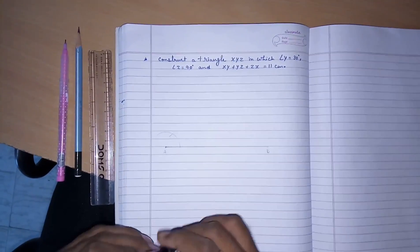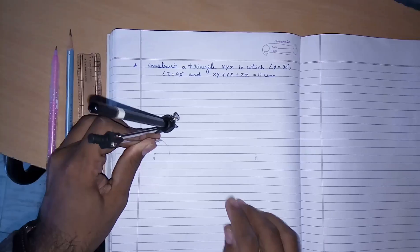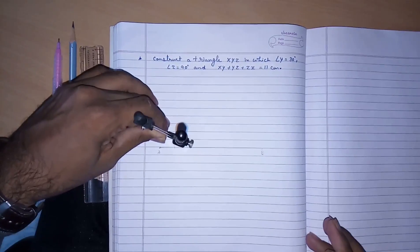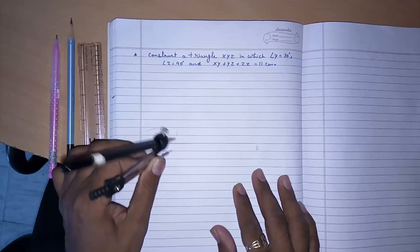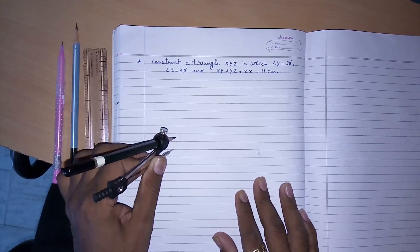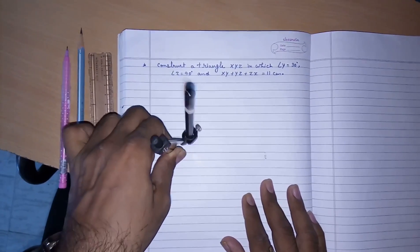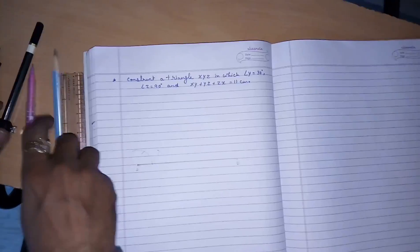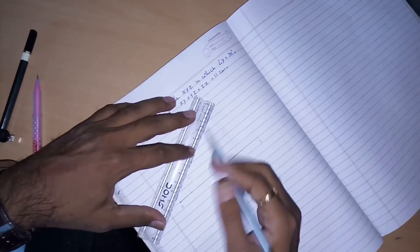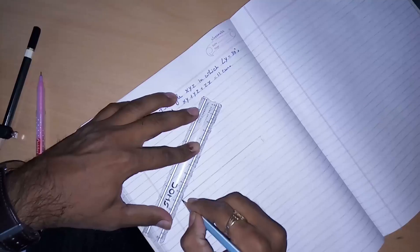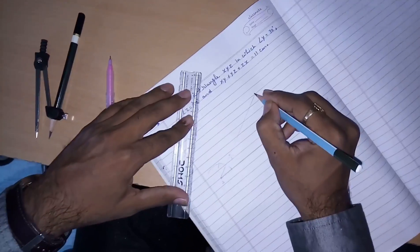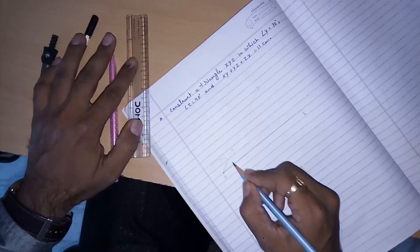This here we will get 60 degrees but we want 30, so again the bisector of it by drawing arc from this point and again a point from this. It is intersecting here, so we will get an angle of 30 degrees from here. This is our first angle 30 degrees.